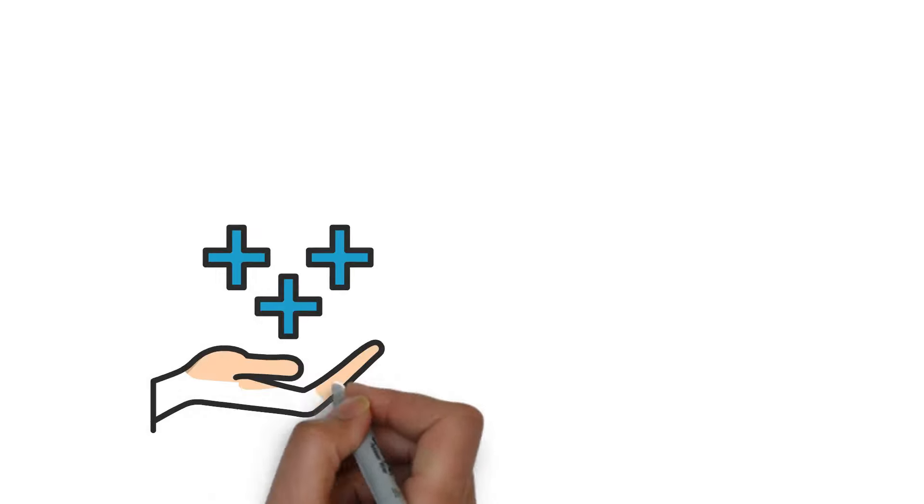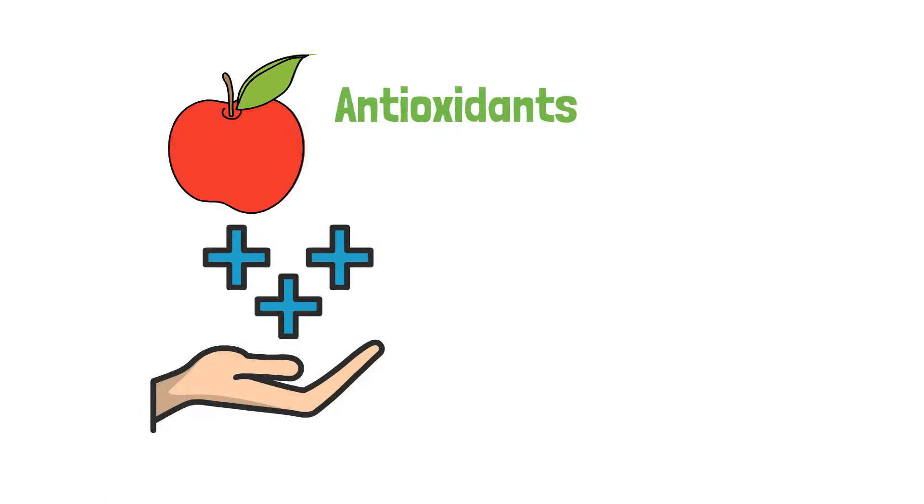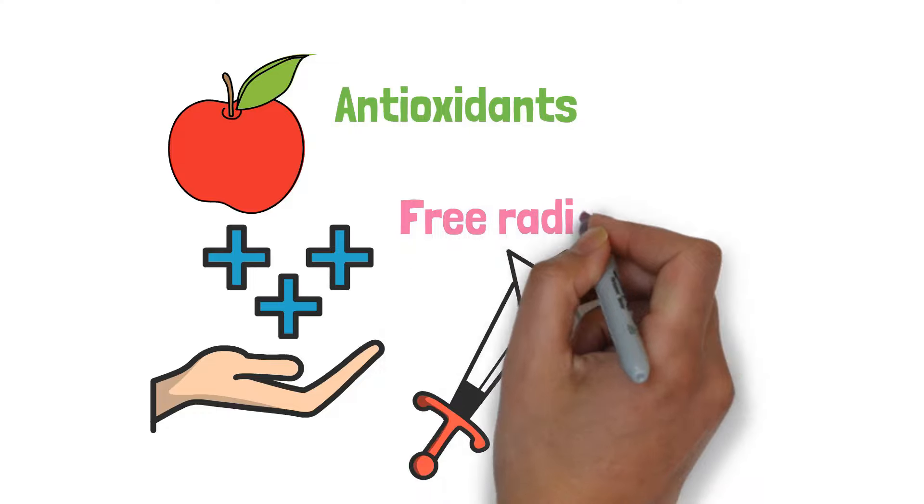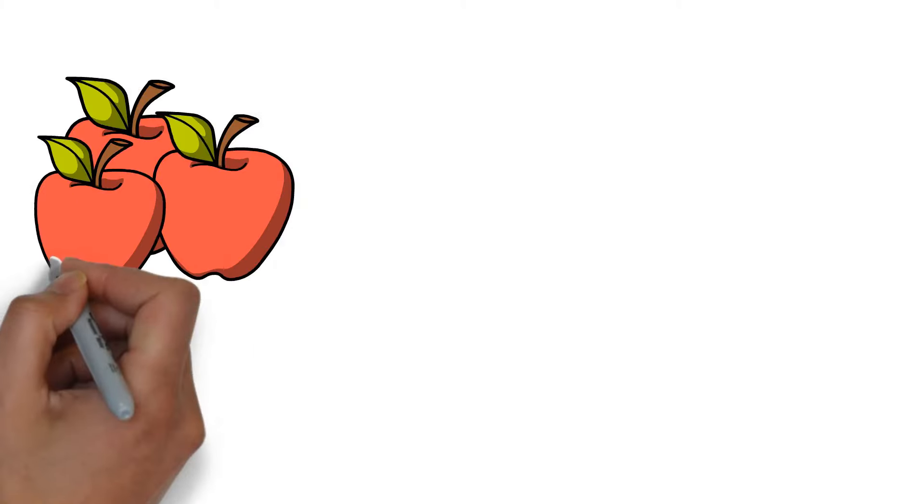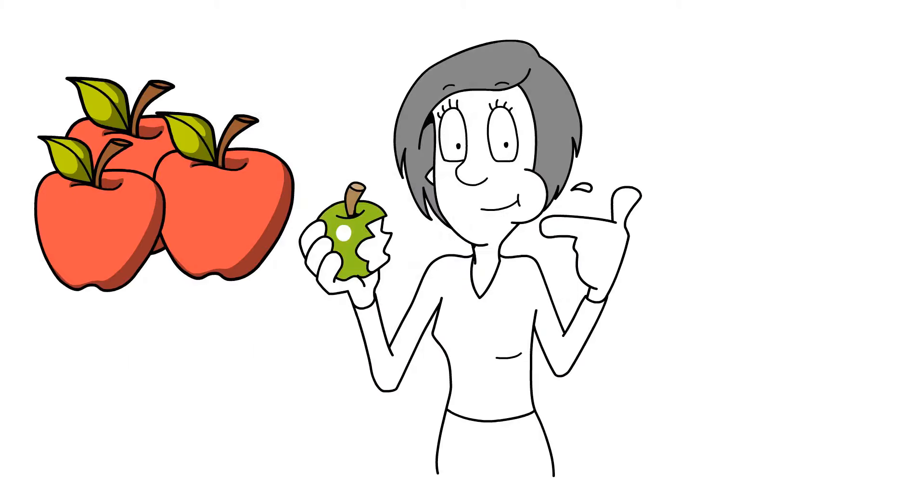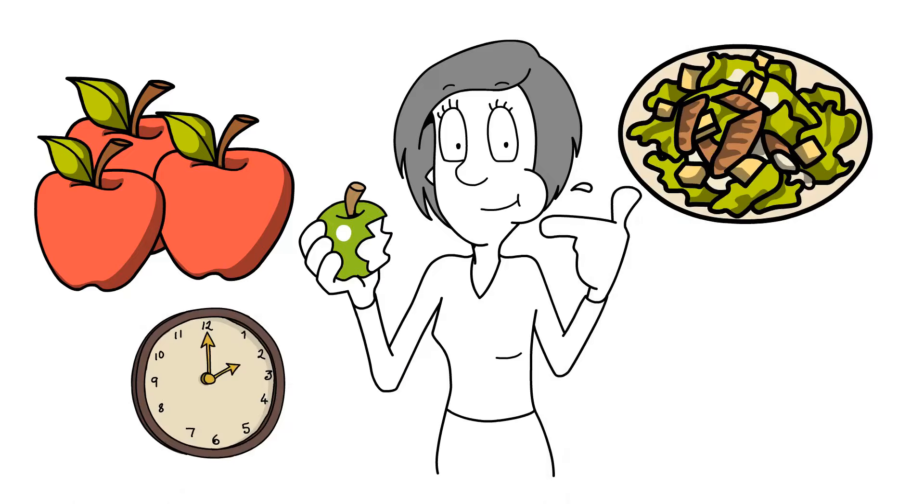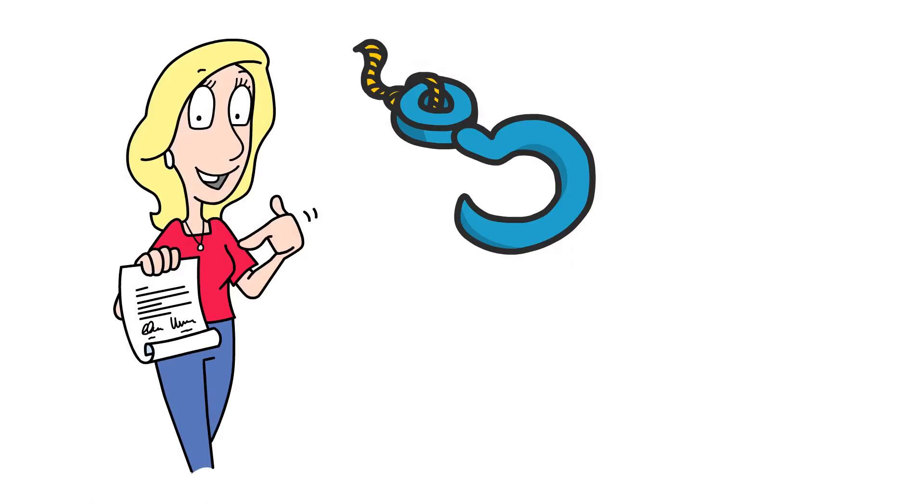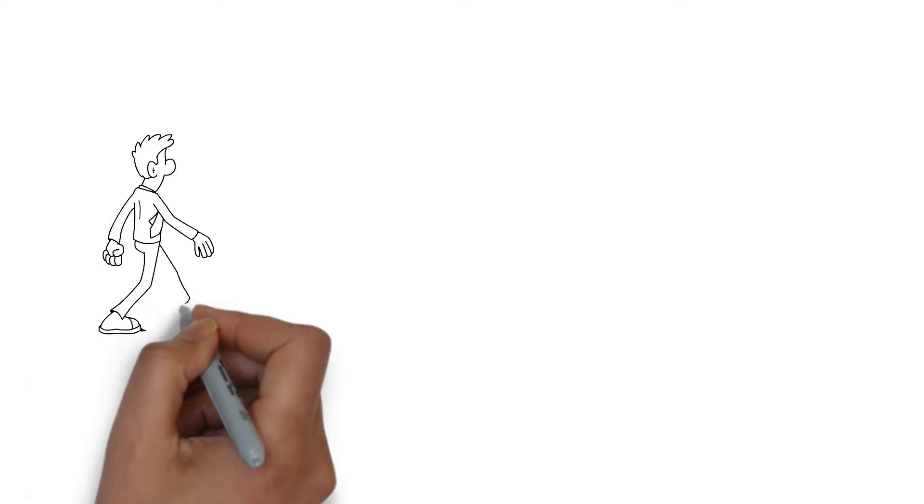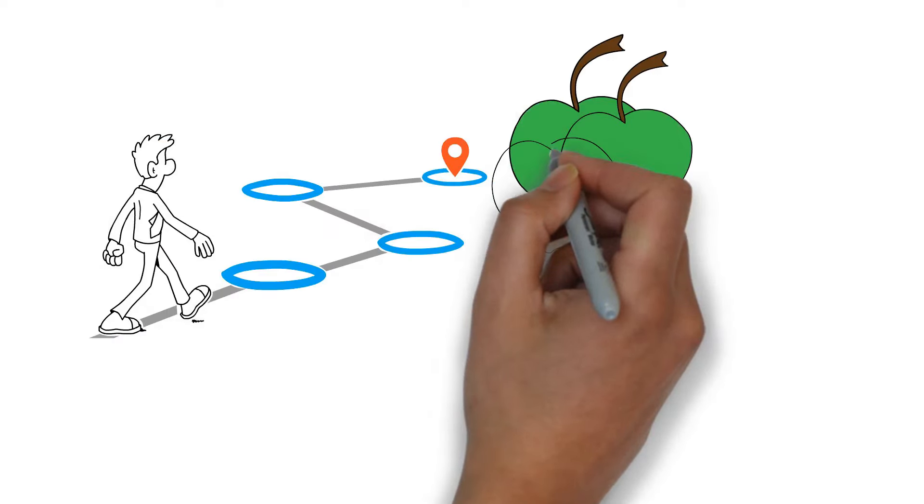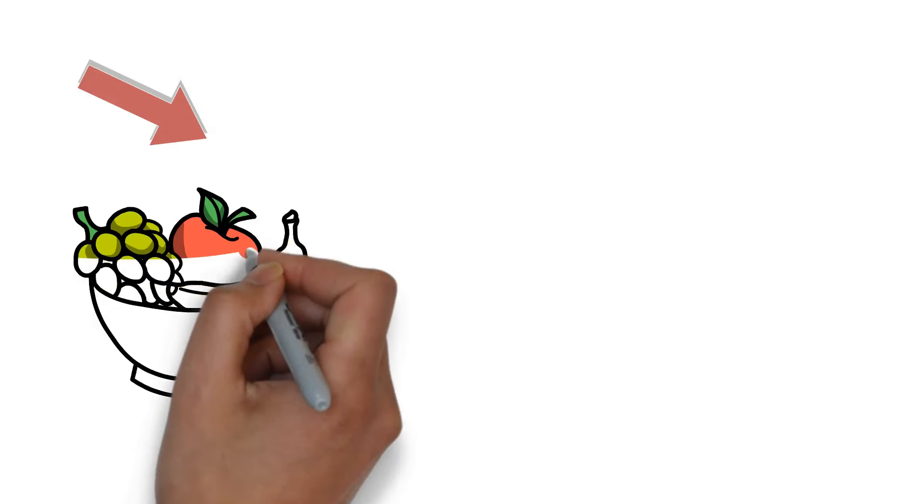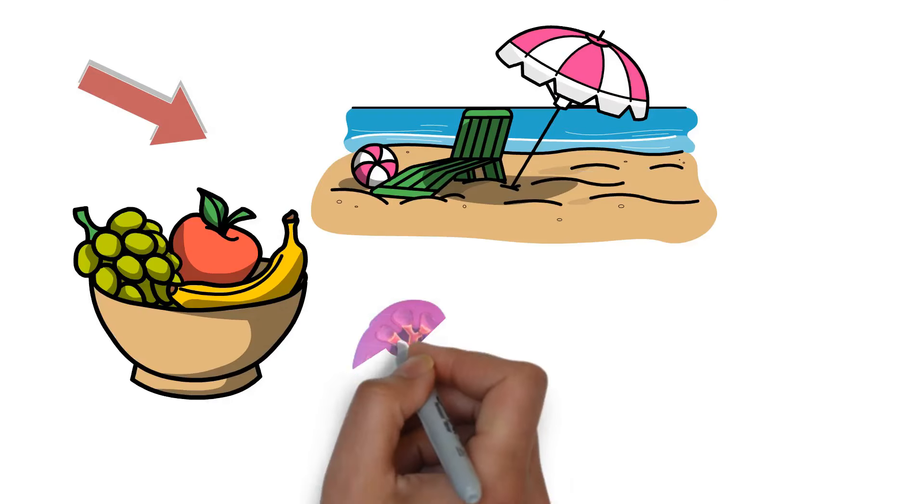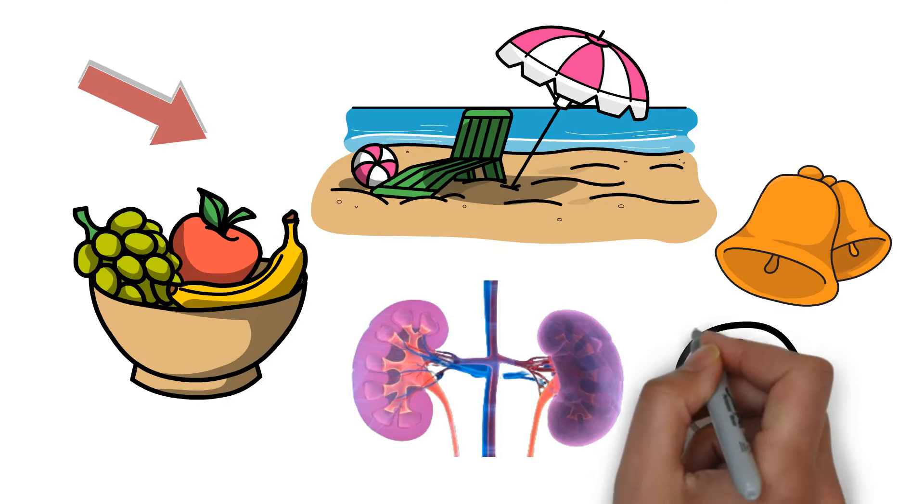But the benefits don't stop there. Apples are also loaded with antioxidants which fight off the free radicals that can cause damage to your kidneys and other organs. Incorporating apples into your diet is as easy as, well, eating an apple. Snack on them through the day, toss them into salads, or bake them into healthy desserts. It's a simple tasty way to give your kidneys the support they deserve. As we crunch our way through the benefits of apples, let's not forget that our kidney health journey is far from over. Up next, a fruit that's not only a summer favorite but also a kidney health champion. Stay tuned to find out what it is.